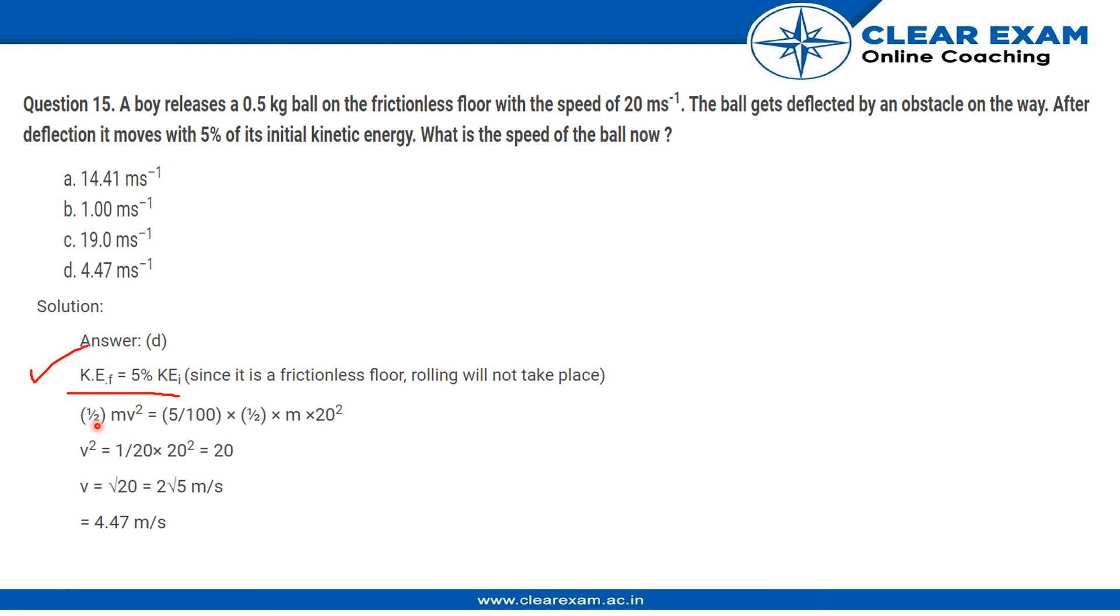Using that, we can find v² = 1/20 × 20² which becomes 20. So v, that is the final velocity, is √20 which is 2√5 m/s, which becomes 4.47 m/s. Thank you.